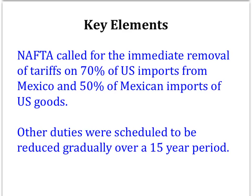U.S. firms were also given access to almost all service sectors, and U.S. foreign direct investment and intellectual property rights were now protected in Mexico. Other issues included the elimination of export subsidies, where governments tried to give their domestic manufacturers a leg up in international competition through various measures, including low-interest loans, tax breaks, and easy access to foreign exchange.